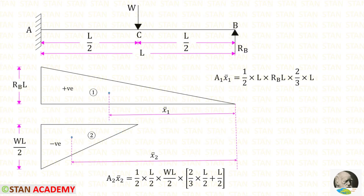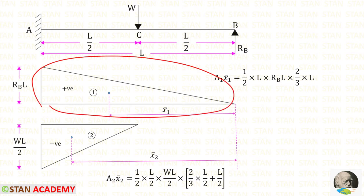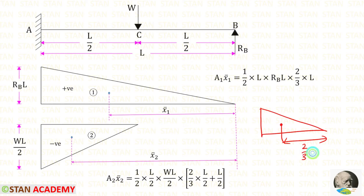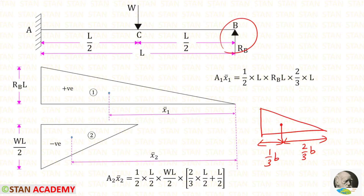Now let us find area 1 and X1 bar. This is a triangle. The formula for the area of a triangle is half into B times H. Here B is L and the height is RBL. For X1 bar, taking a right angle triangle, the centroid distance towards the right is 2/3 into B and towards the left is 1/3 B. Here we are finding the centroid towards point B, so we use the formula 2/3 into B, where B is L.